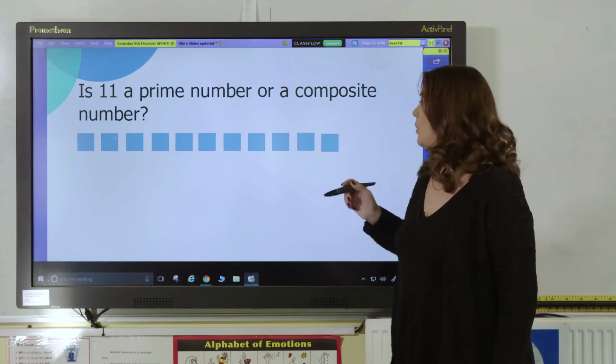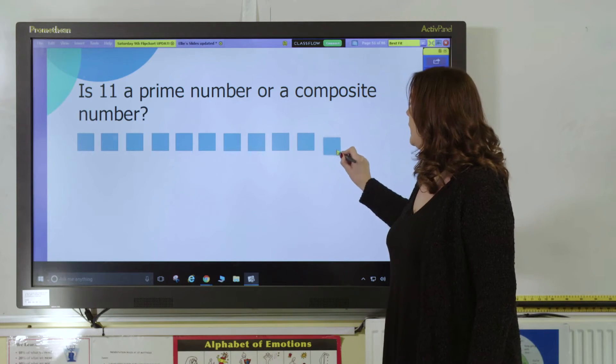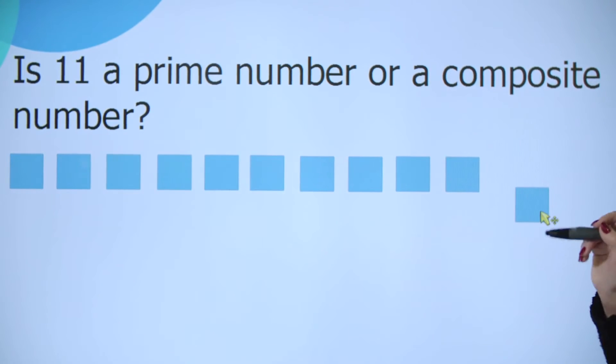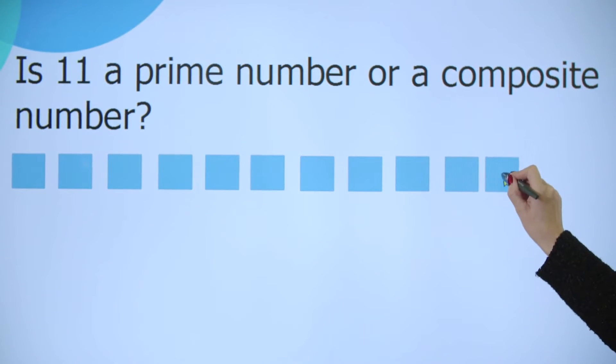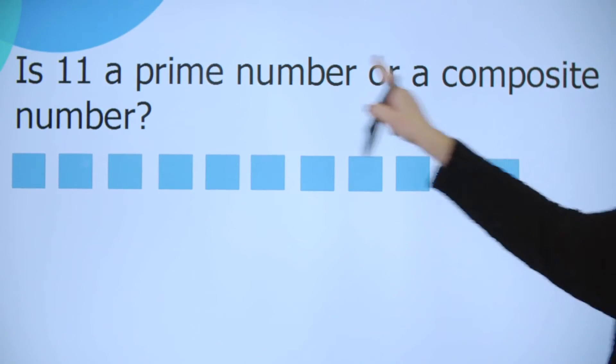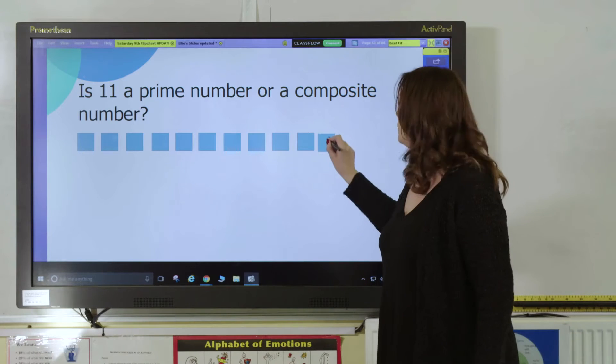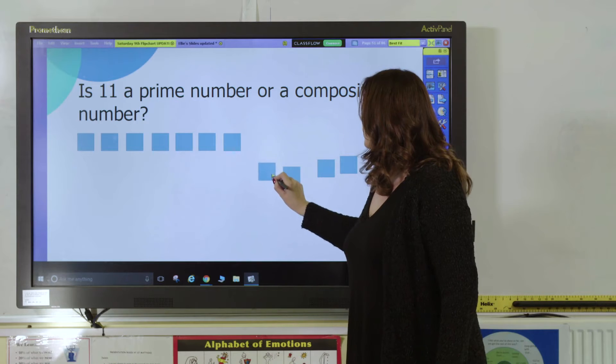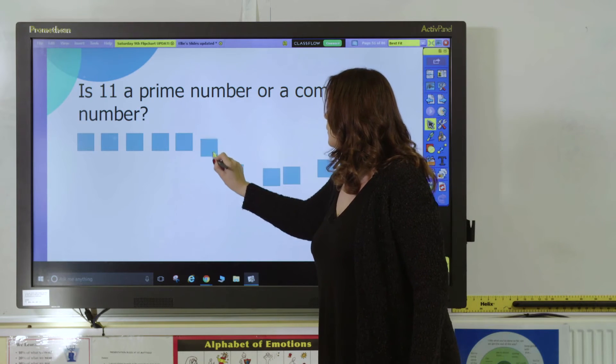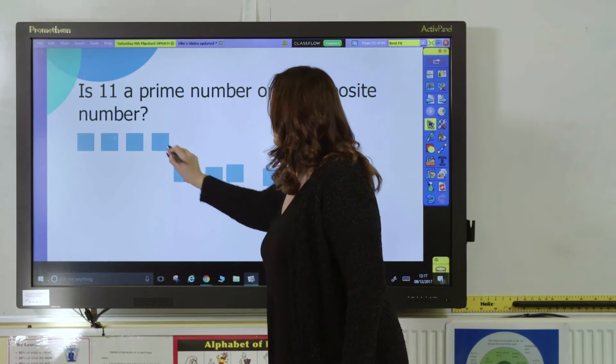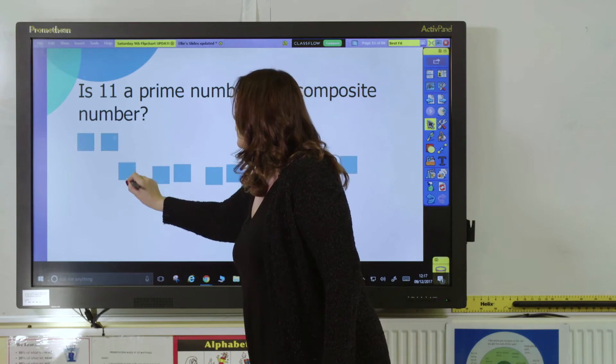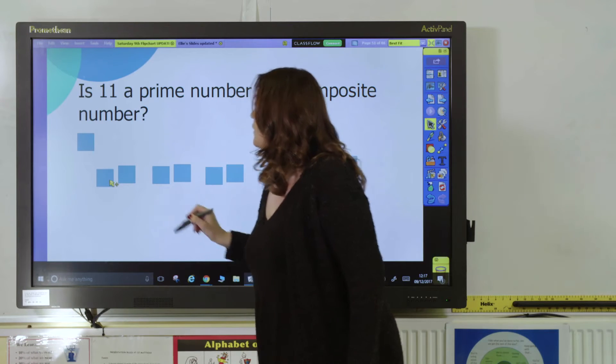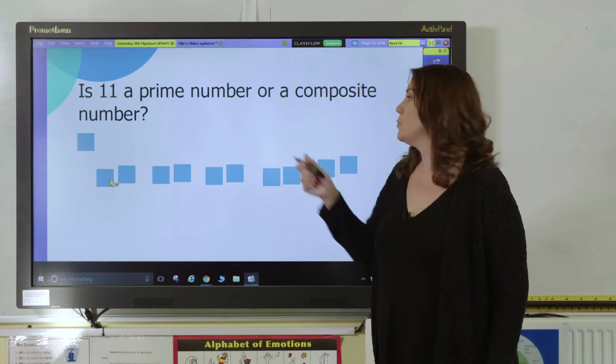Now we can move our base 10 blocks and we can see that we could make 11 groups of 1. We could make one big group of 11. Can we split them into 2s?